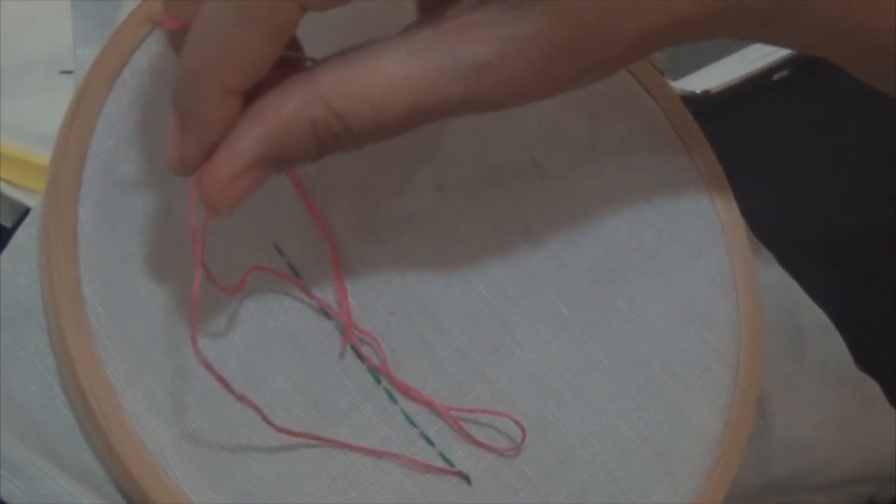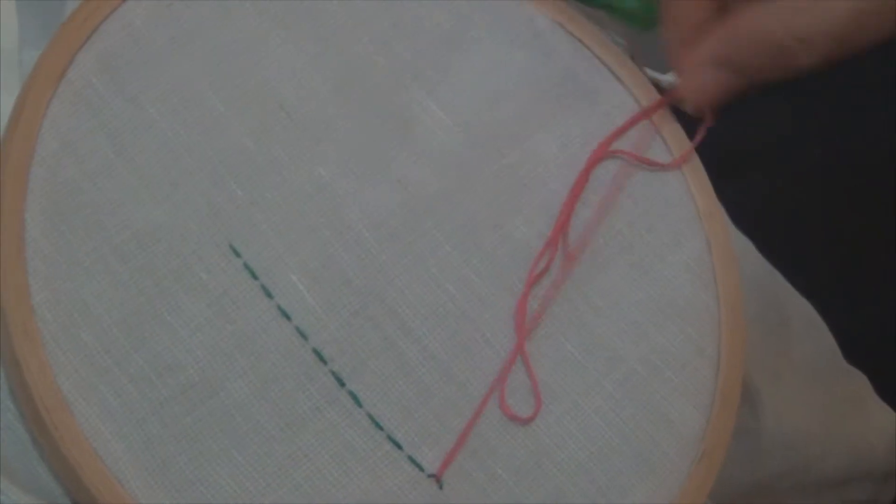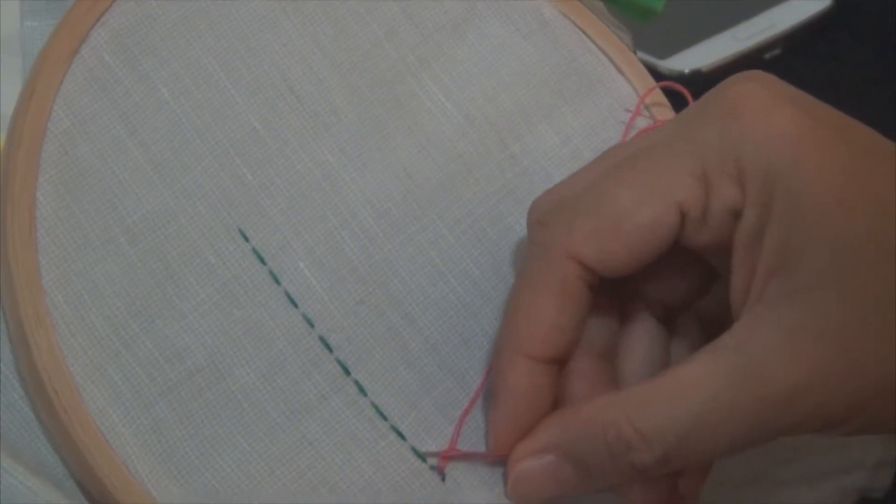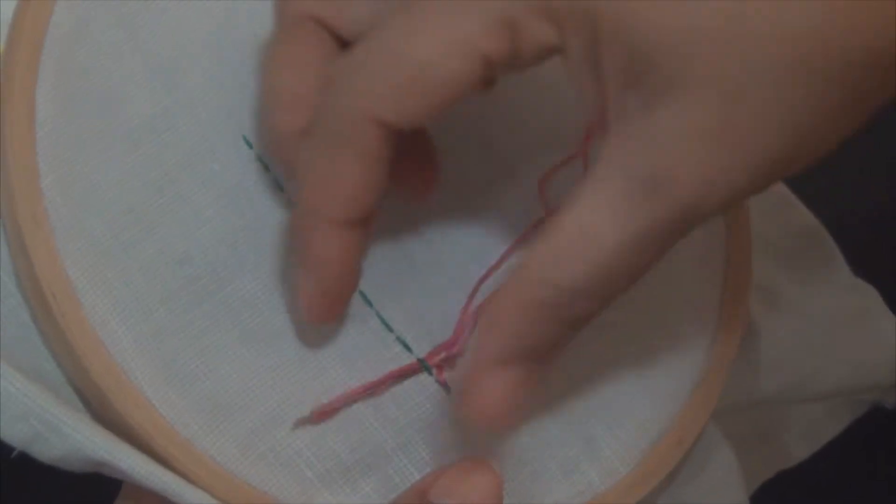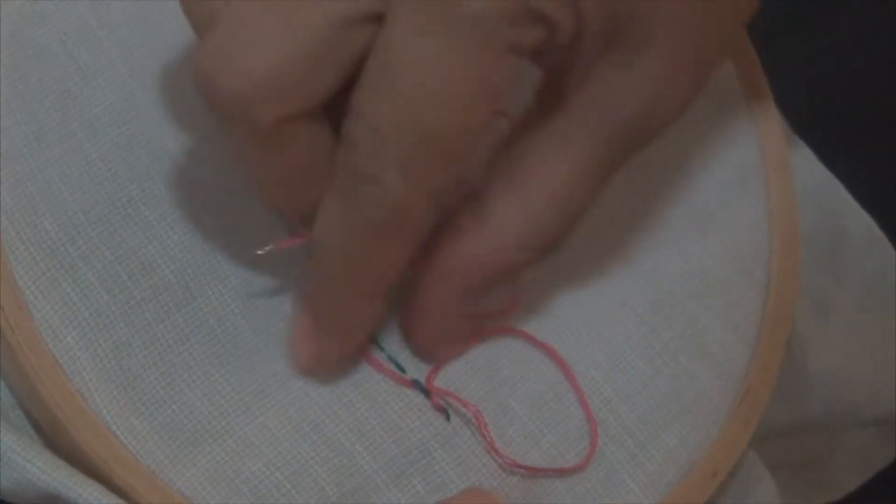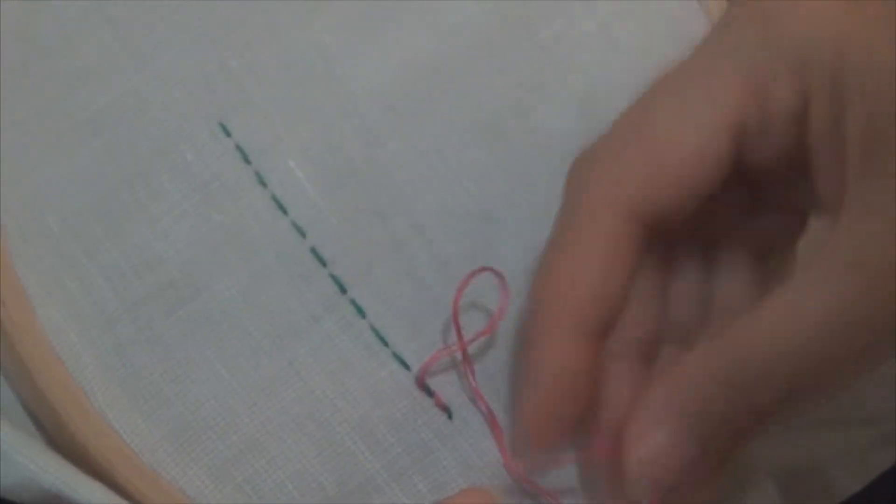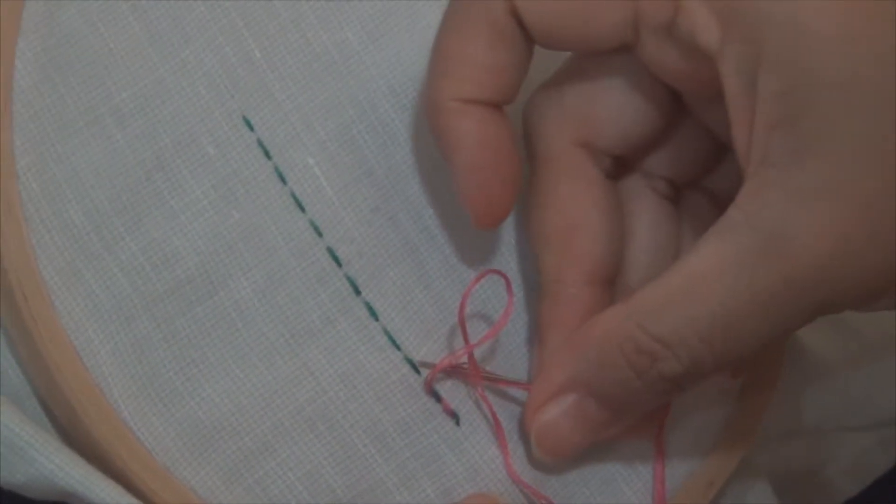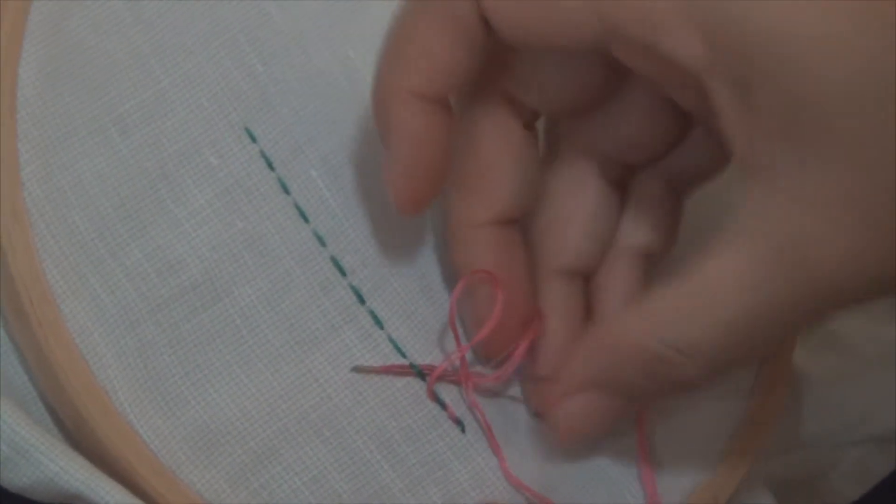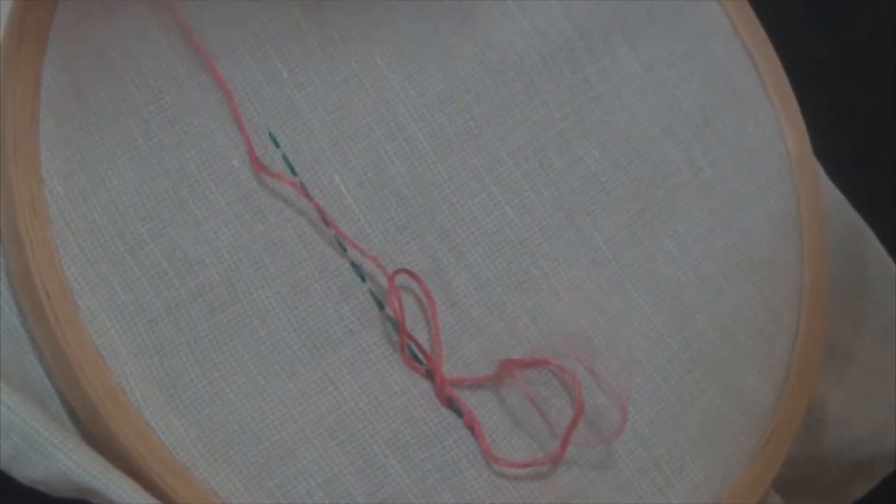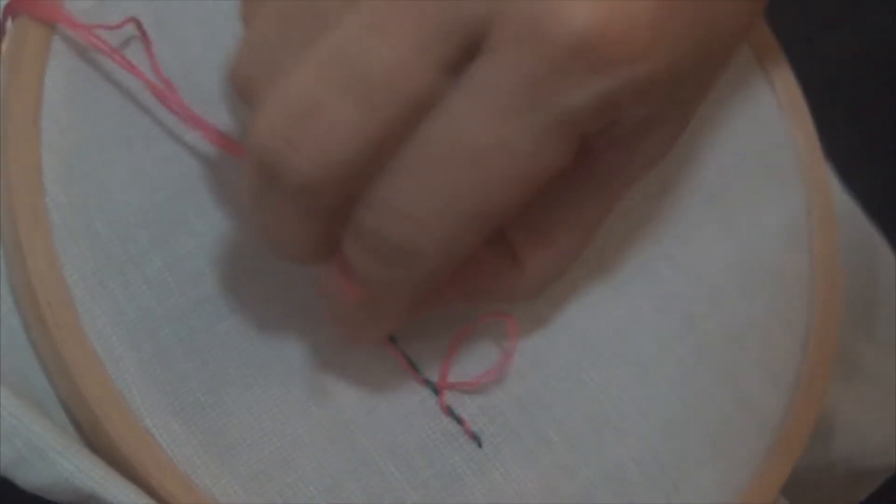Then again we will come back this side and again we will move the thread like this. Again come to the right side. From the back side of the needle go below the straight stitch.